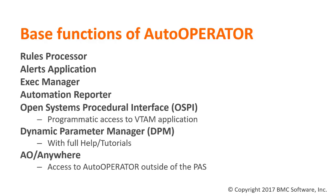The Dynamic Parameter Manager function manages the parameters which control Auto Operator and allows users to make dynamic changes through online panels to the Auto Operator parameters, such as those stored in the MainView UBB PARM file. The AO Anywhere function allows users to access and interact with Auto Operator from outside of the Auto Operator product address space — for example, a batch job that needs to perform automation such as creating a WTO or write-to-operator message, or issuing a system command.